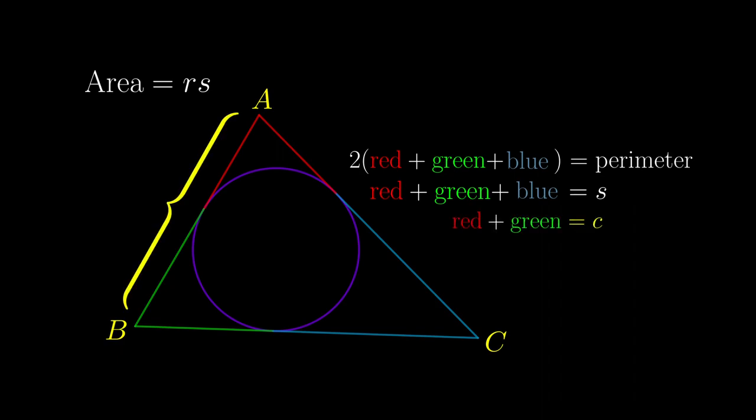Now if we concentrate on side a, we have red and green segments adding up to c, and so the blue segment has the length s-c. Similarly, the red segment has length s-a, while the green one has length s-b. A good mnemonic is that the segments from A would have length s-a, from B would have length s-b, and from C would have length s-c.